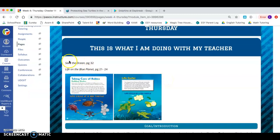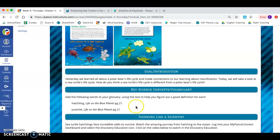The first thing we're going to do is read these two pages from Save the Ocean and Life on the Blue Planet. While we're reading, I want you to look for the words hatchling and juvenile because we're going to add those to our glossary.